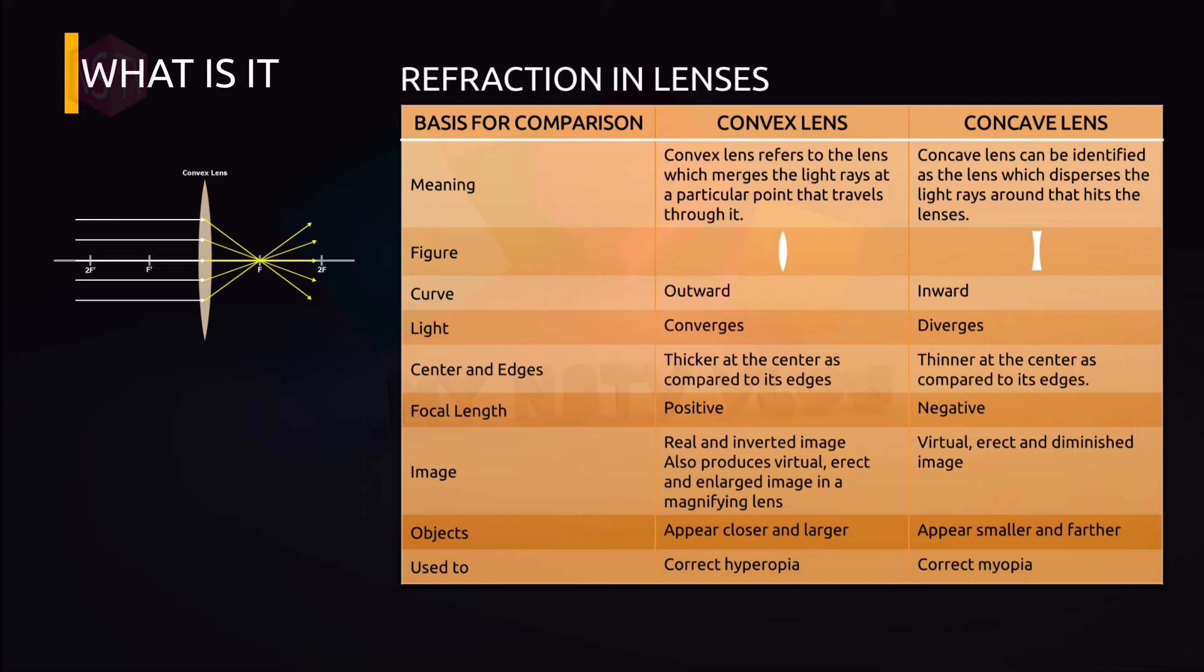On the other hand, concave lens can be identified as the lens which disperses the light rays around that hits the lenses. Light rays diverge. It curves inward and is thinner at the center as compared to its edges. It has negative focal length. It produces erect or diminished or smaller image. The object appears smaller and farther. It is used to correct myopia.